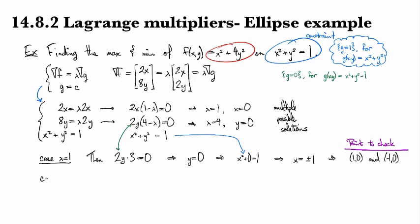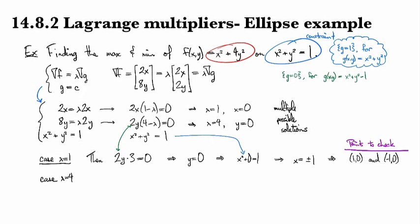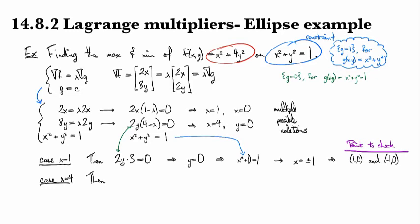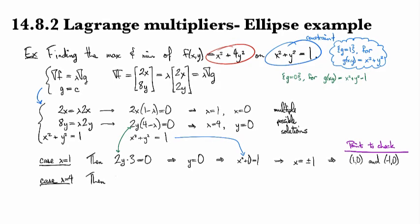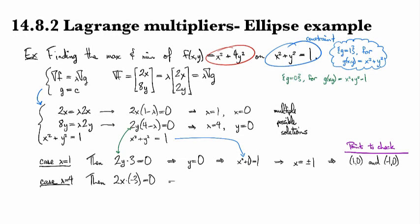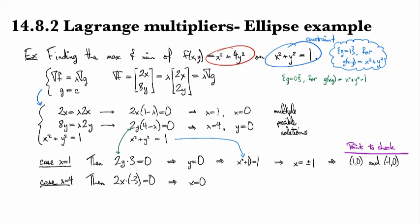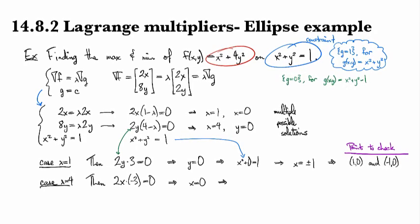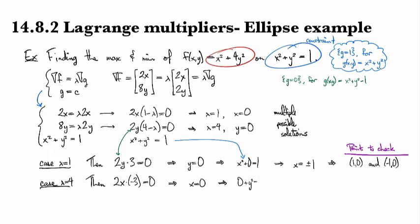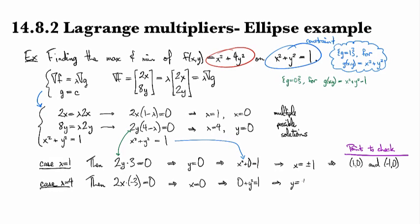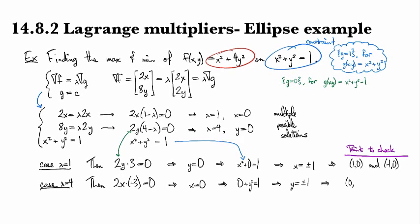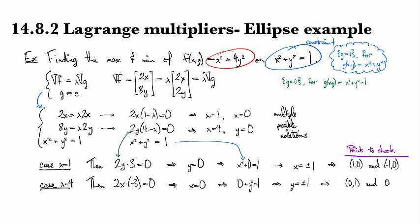Now backing up, we have the case when lambda is equal to 4. For this one, the second equation in our system zeros out. The first equation gives us 2x times minus 3 is equal to 0, which implies x has to equal 0, which implies this time we've got 0 plus y squared equals 1. So y is equal to plus or minus 1. And that gives us a couple more points to check, namely 0, 1 and 0 minus 1. So now we have four places to evaluate f.